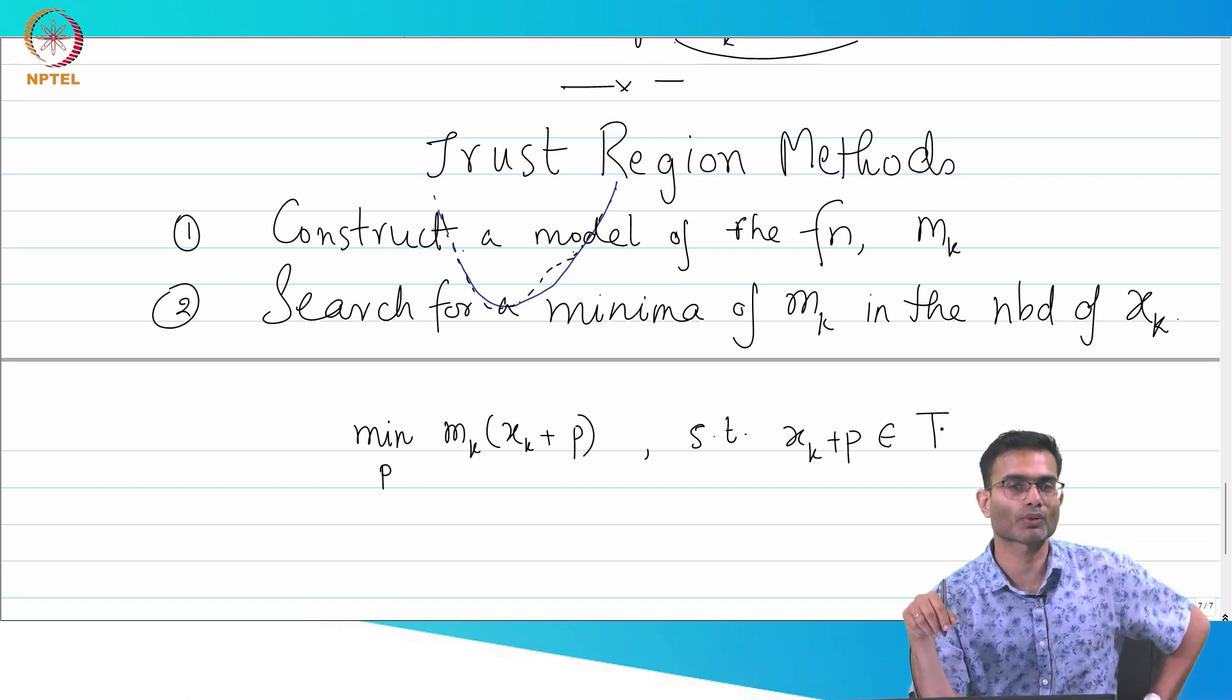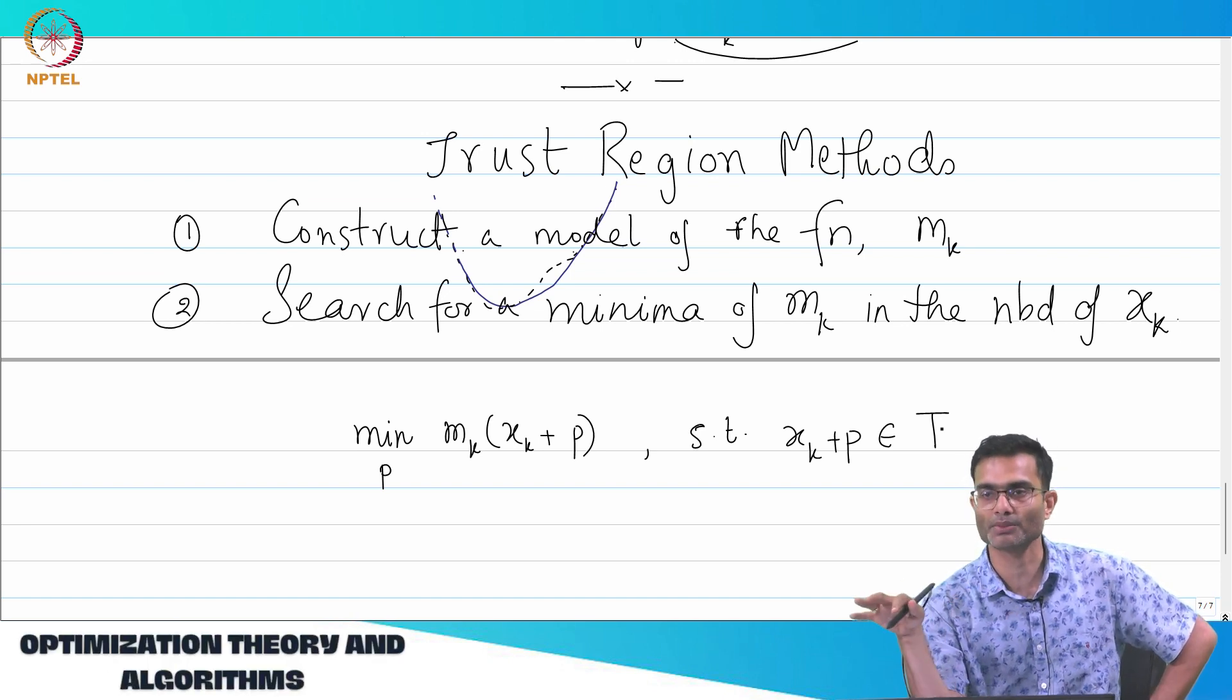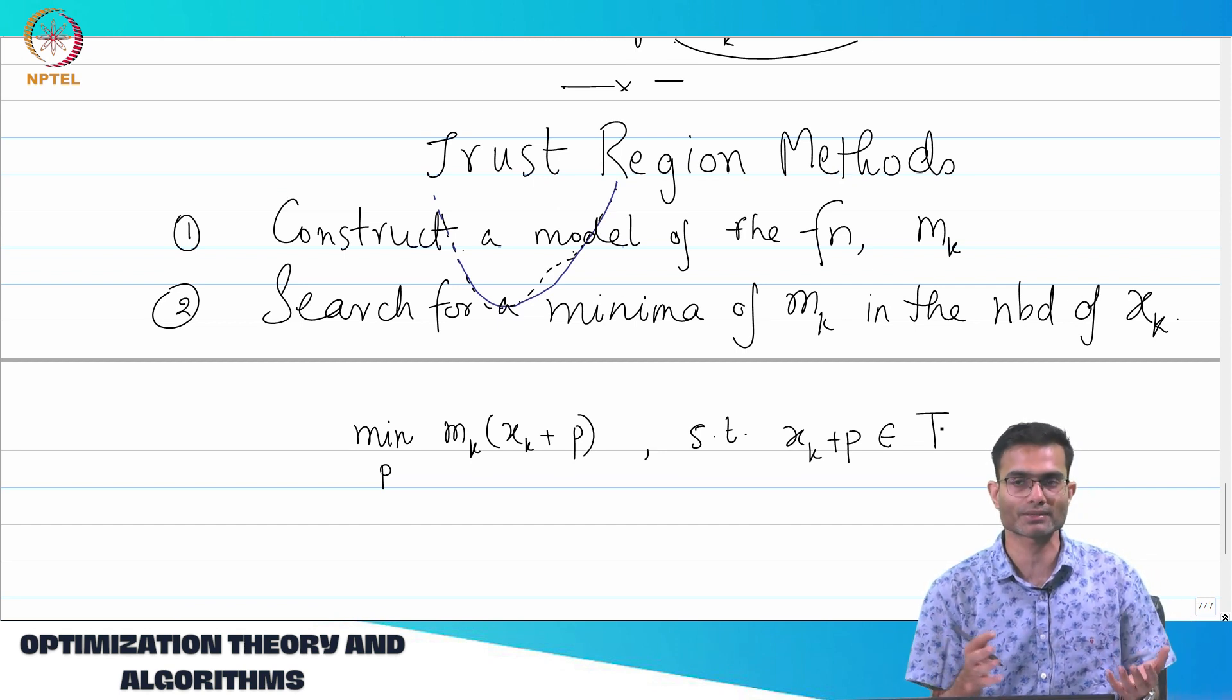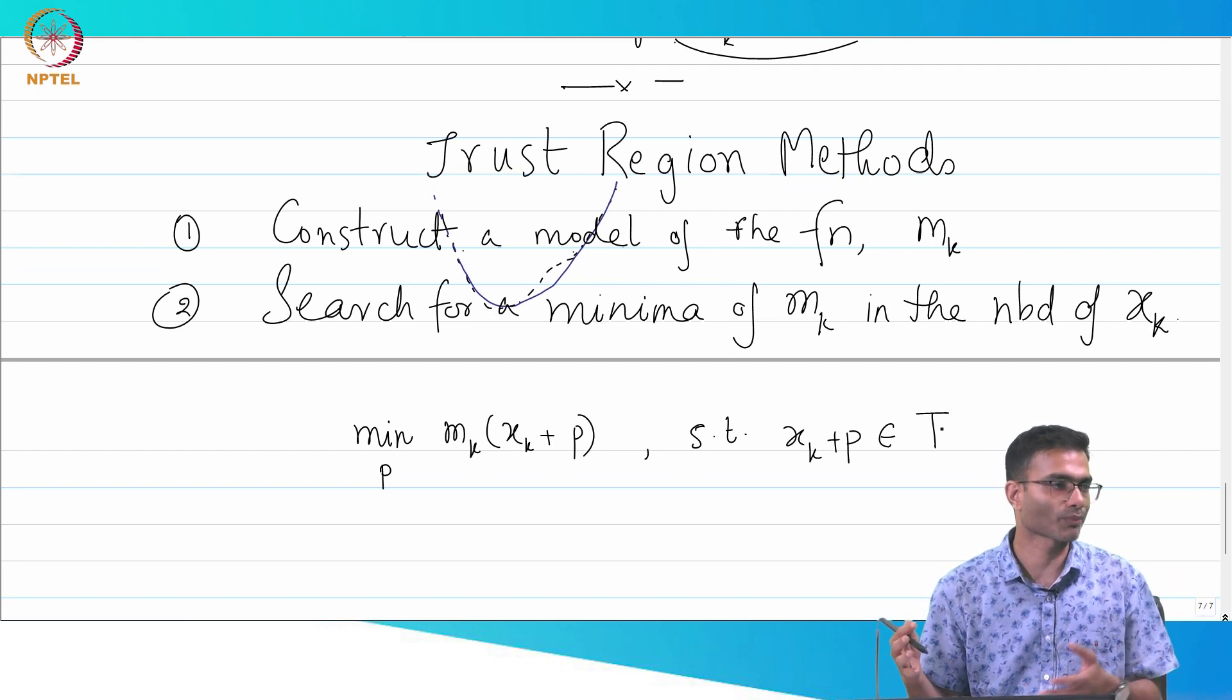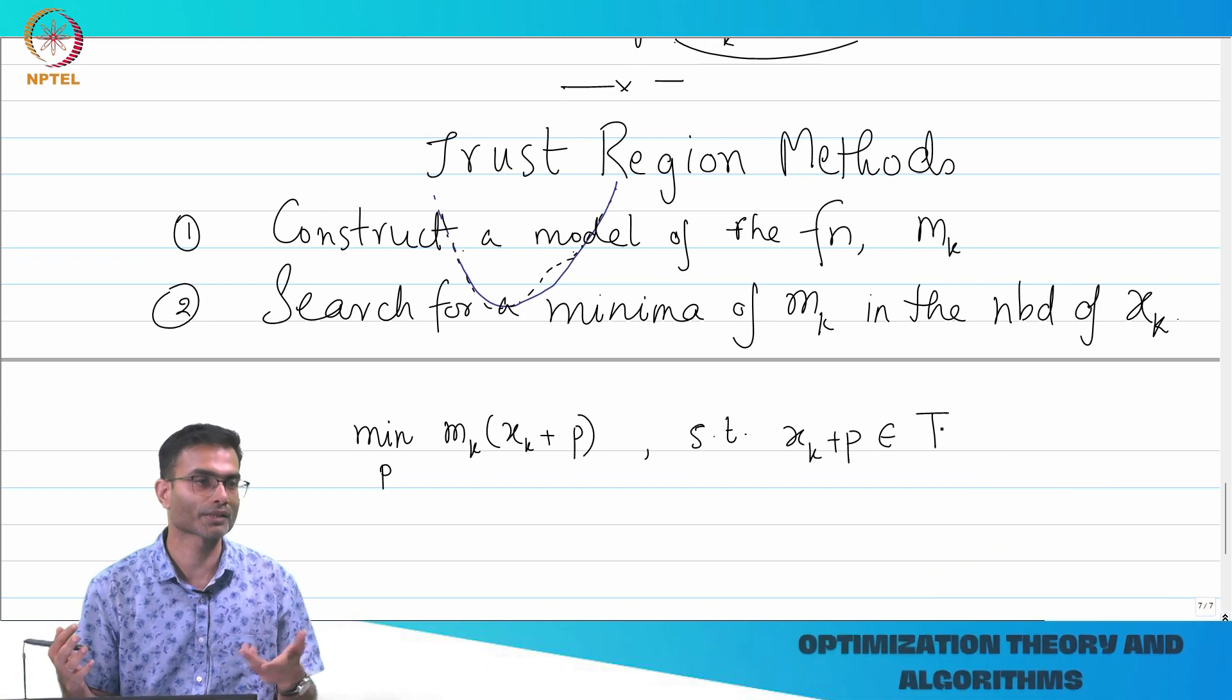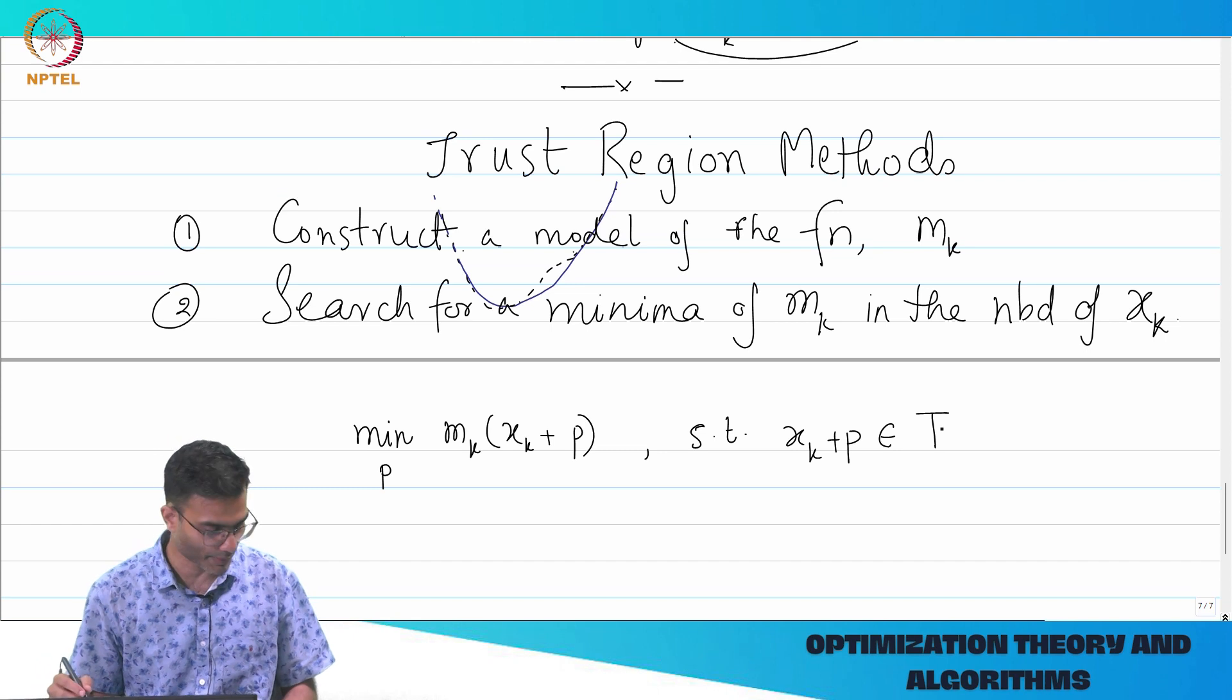So this is in a nutshell what is the trust region approach. It does not look radically different from a line search approach, right? I mean there are lots of similarities. That is why we will not also cover this in the course. If you understand line search you can easily apply that same analysis to trust region. What are the ingredients that we are working with? Essentially Taylor's theorem and legitimacy of descent directions which also came from Taylor's theorem. So that is really the only thing over here.